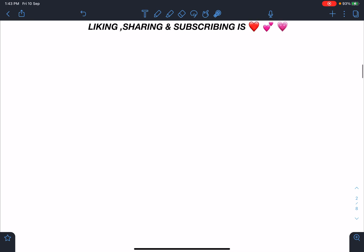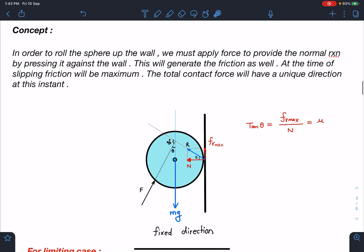Let us discuss the concept part of this problem. In order to roll the sphere up the wall, we must apply force to provide the normal reaction. One component of this force will be pressing this sphere against the wall and another one will generate friction because it is a rough wall. If this wall was not rough, this sphere would have moved. So friction also generates here. Just pay attention to the direction of friction.